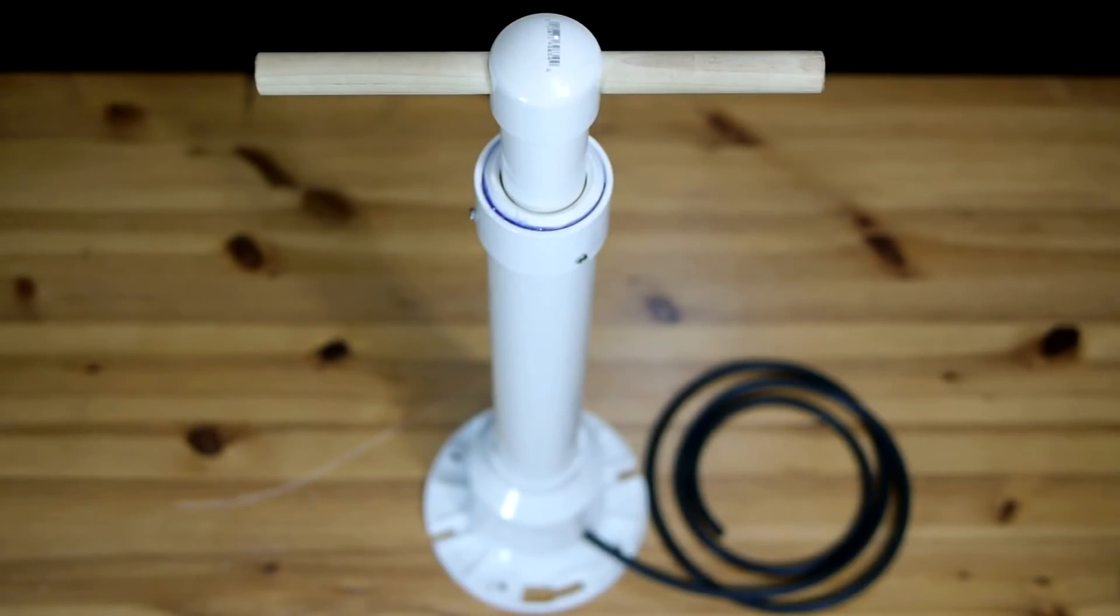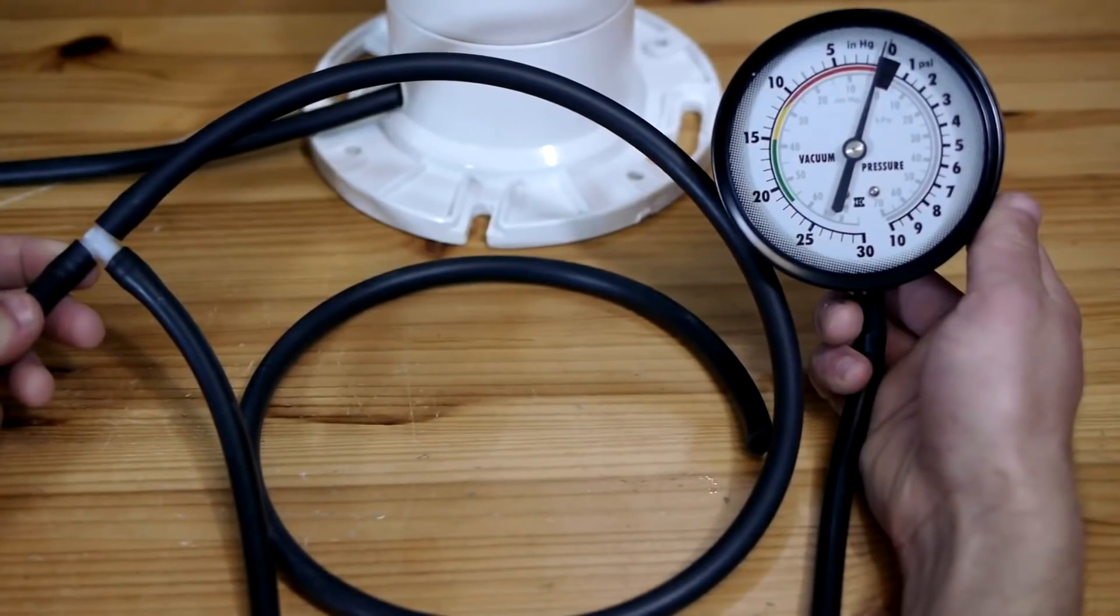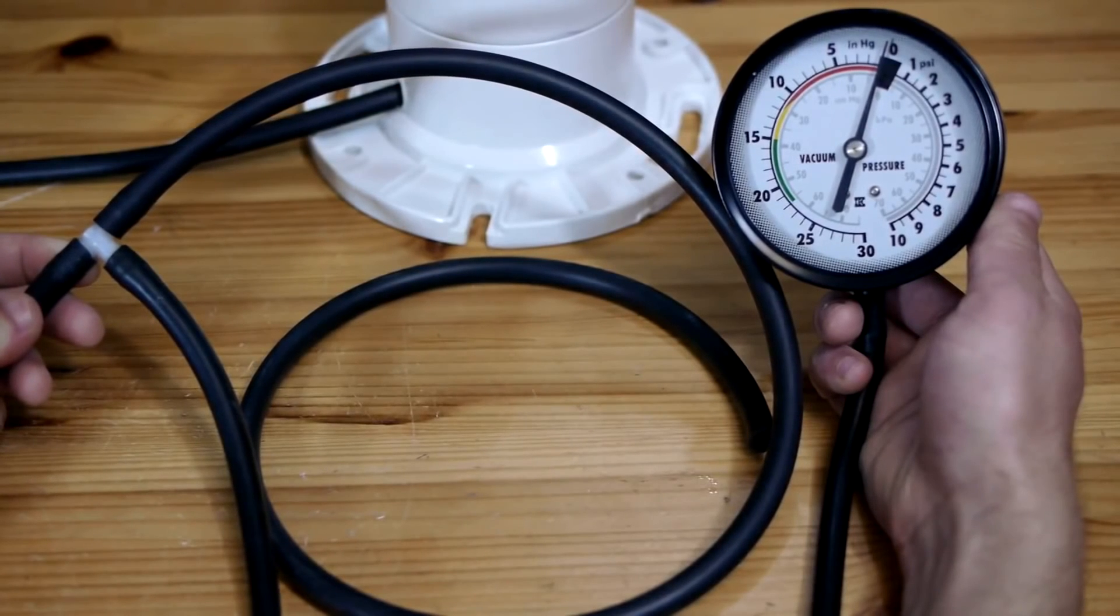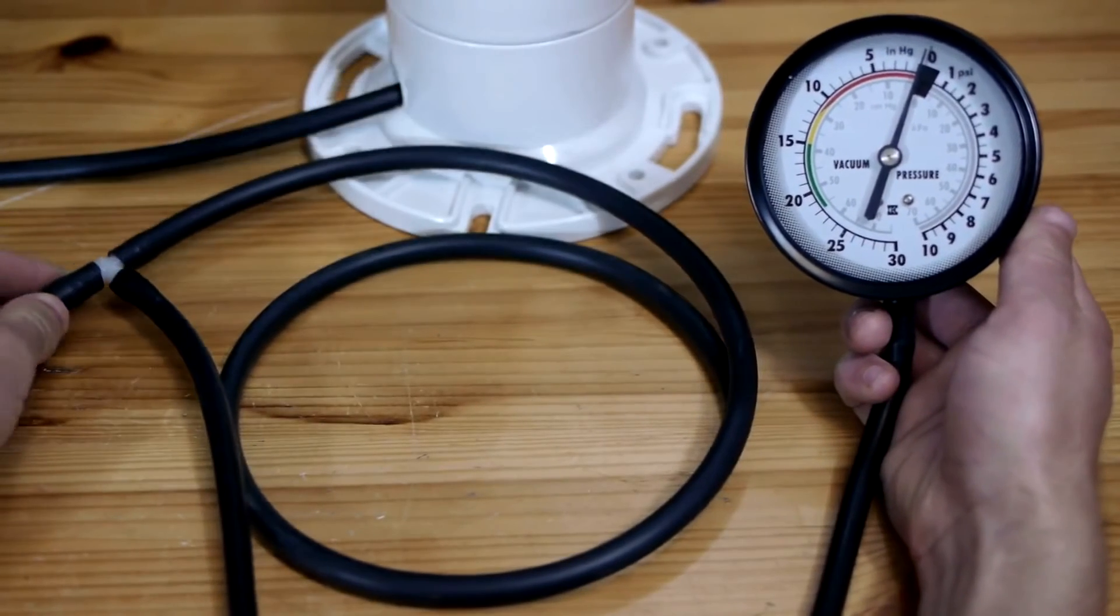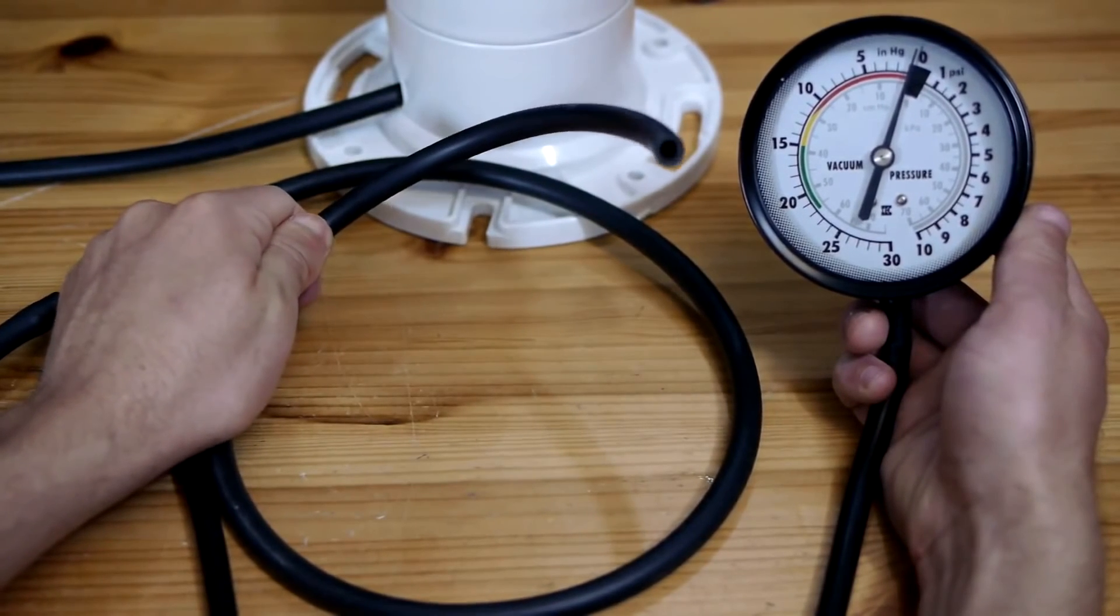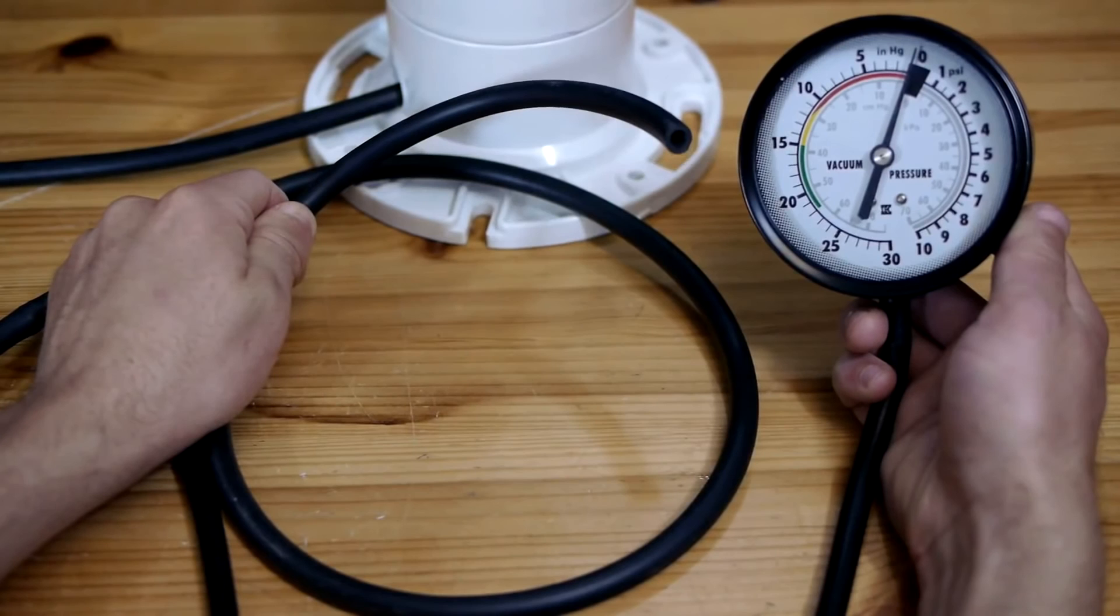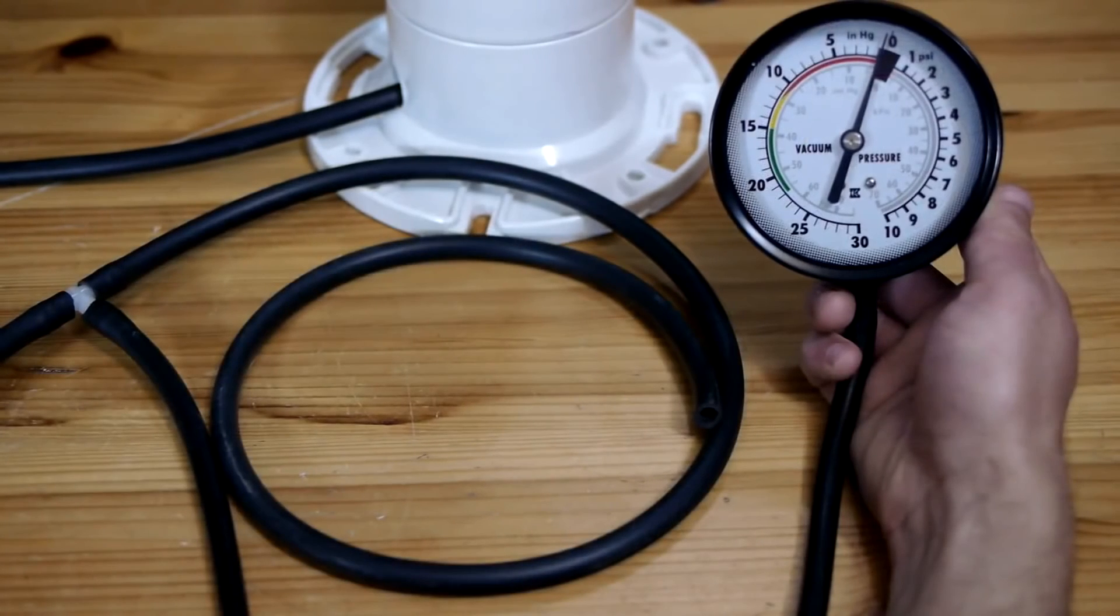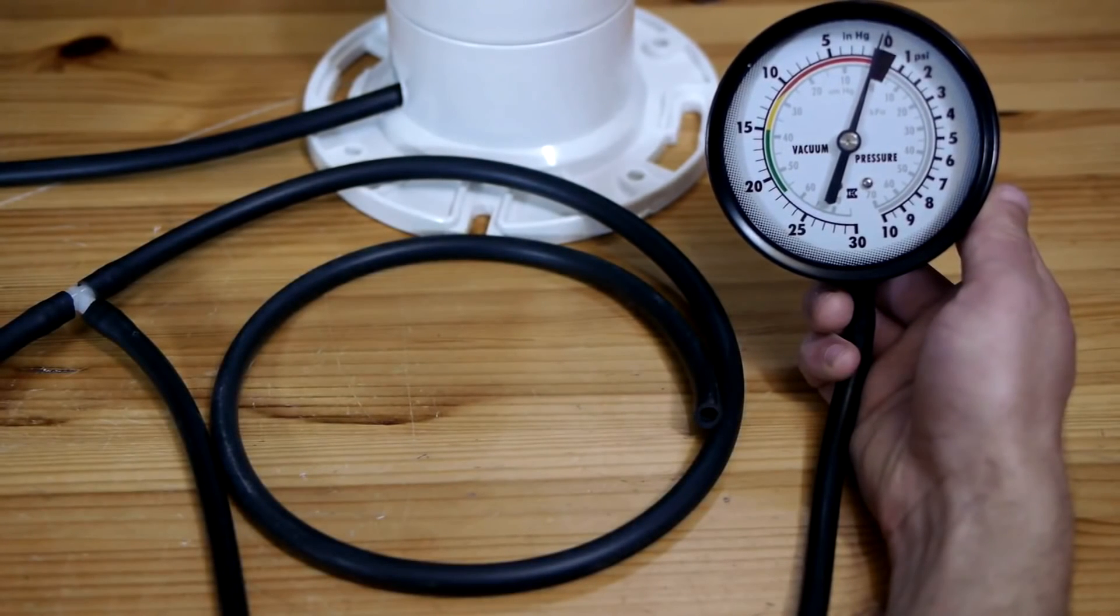The pump is now fully operational. One additional modification that can be made is to splice a vacuum gauge onto the line from the pump using a three-way hose connector. A vacuum gauge will allow the user to tell just how much vacuum is being pulled, with 30HG being the maximum possible. These gauges are readily available at auto parts stores.